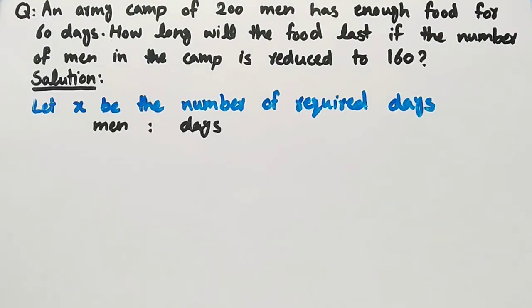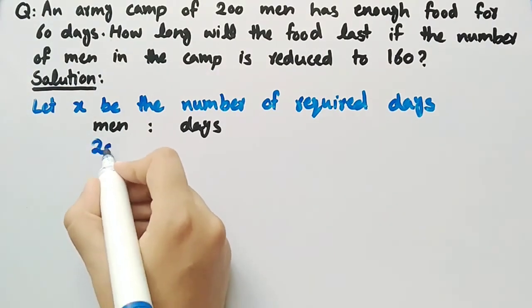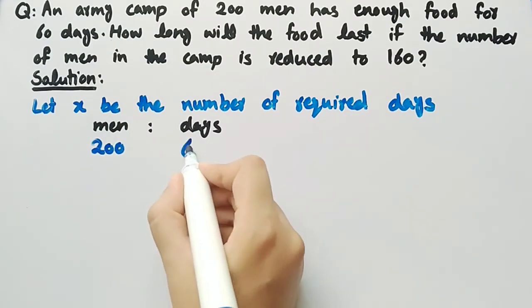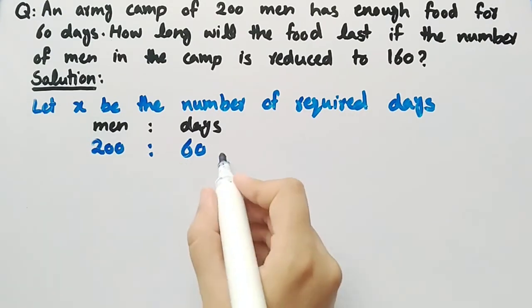Let's write the ratio of the given quantities. It is given that an army camp of 200 men has enough food for 60 days. So we have written the first ratio that is 200 ratio 60.